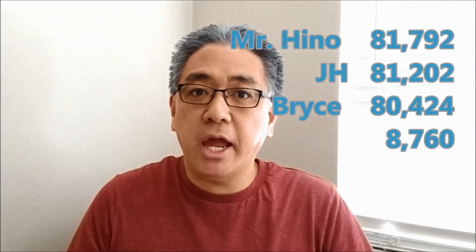So I'll actually keep this high score update rolling, which means if some of you guys can get on this leaderboard, I'll update it next week. So here we go. At number one is Mr. Hino with 81,792 points. The next one is J H with 81,202 points. And Bryce has the third and fourth spots with 80,424 points and 8,760 points.